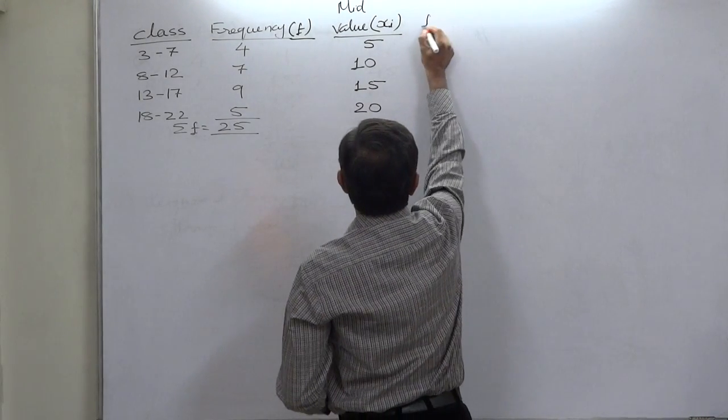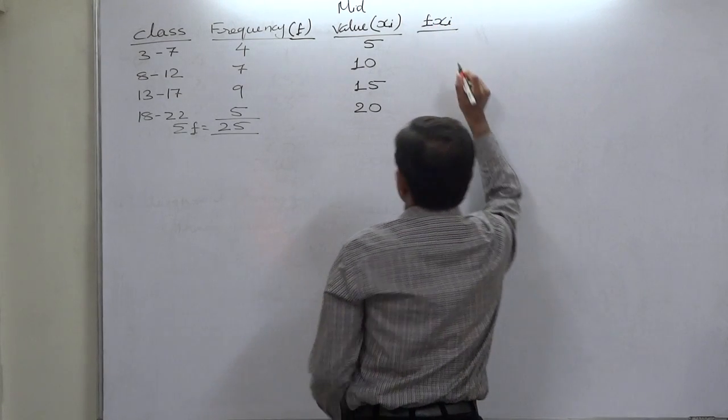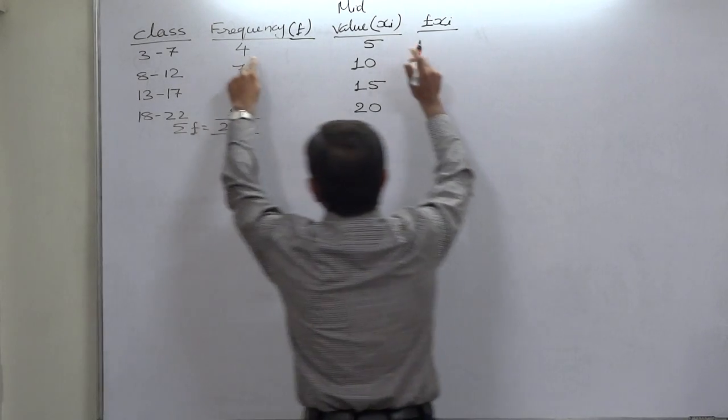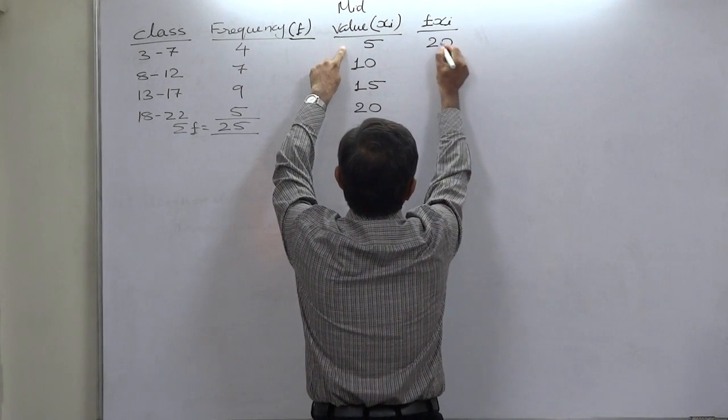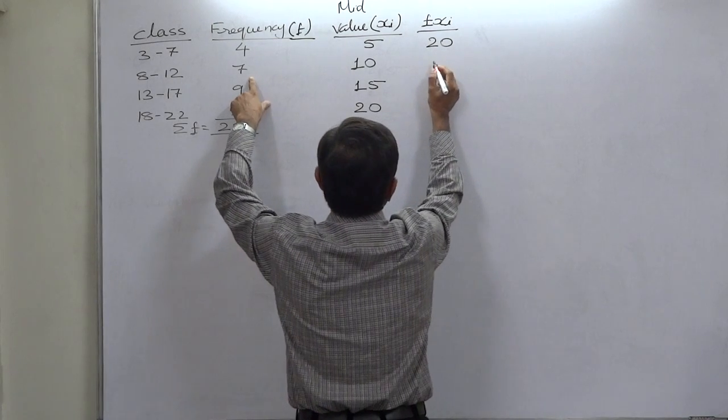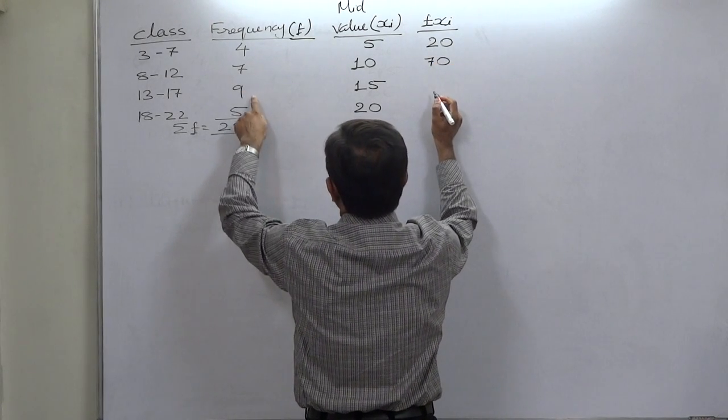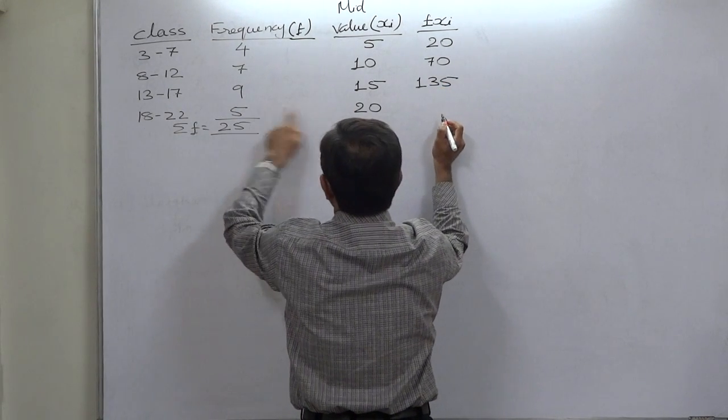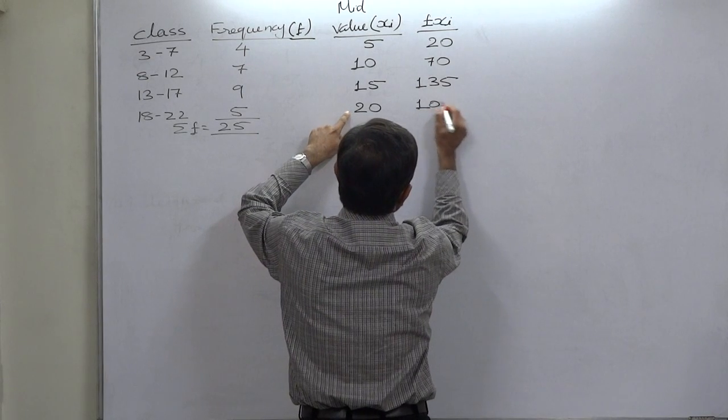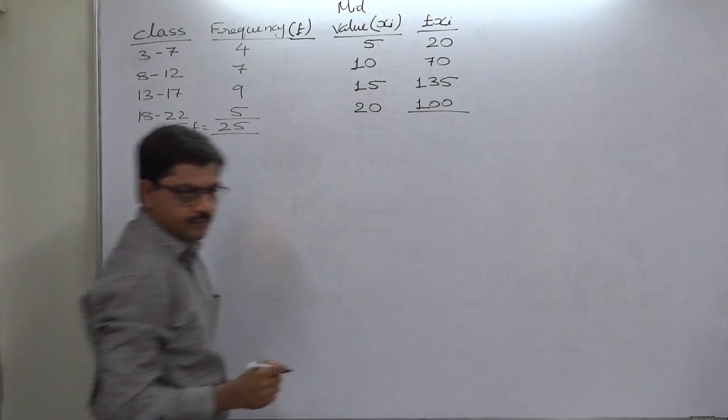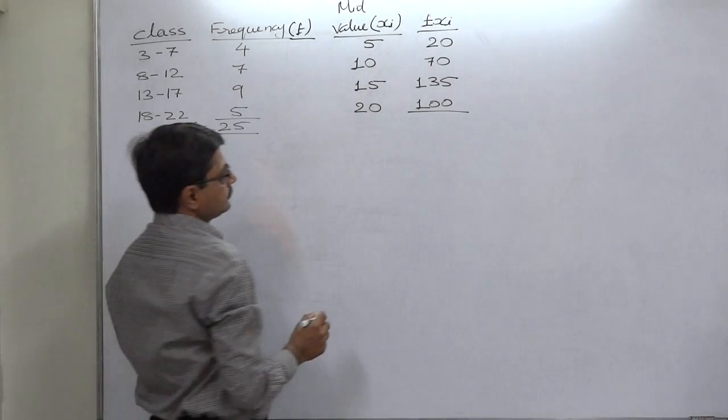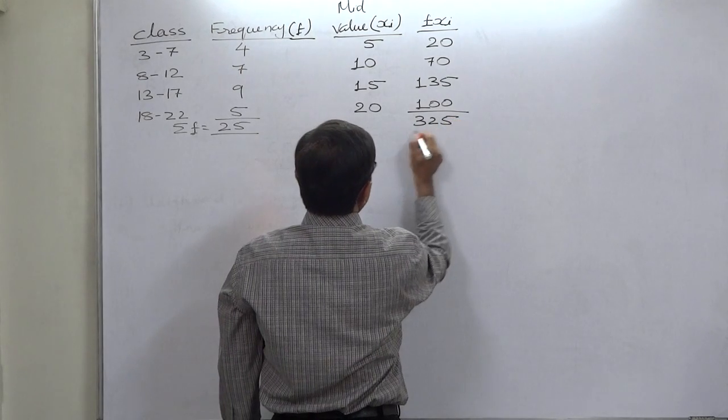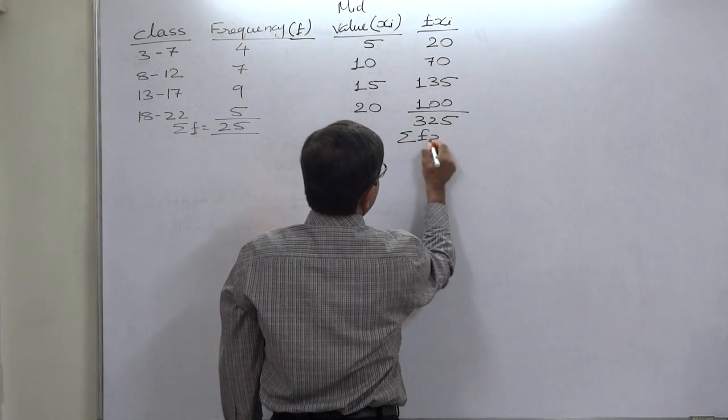Now to calculate mean of the distribution, we have to prepare a column of fx - f means frequency into x midvalue. 4 multiplied by 5 is 20, 7 multiplied by 10 is 70, 9 multiplied by 15 is 135, and 5 multiplied by 20 is 100. Now get the summation of this column, which is 325. This is our sigma fx.